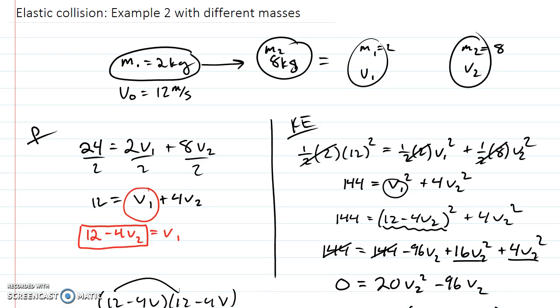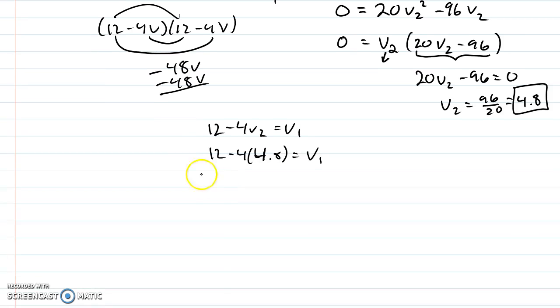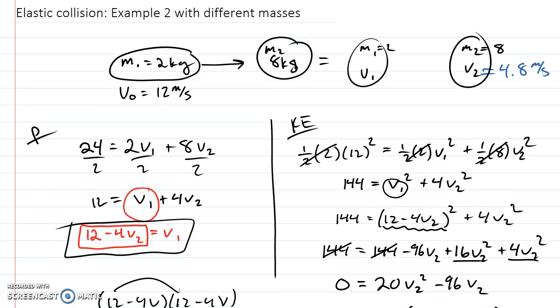So my second object up here, the answer is going to be 4.8 meters per second. Now, I have to go back, though, and figure out what is the velocity of the other object. So I'm going to go back to this red formula right here. The reason I do is because v2 I know. v1 is what I want. If I plug in 4.8 here, I will get the velocity of the first object. So 12 minus 4 times 4.8, I'm getting negative 7.2.